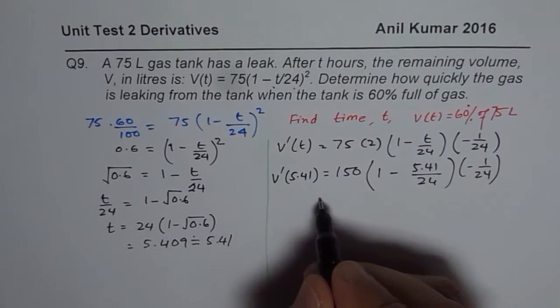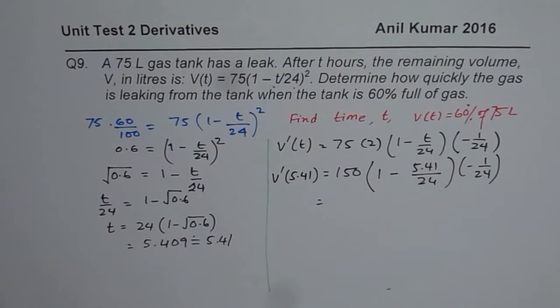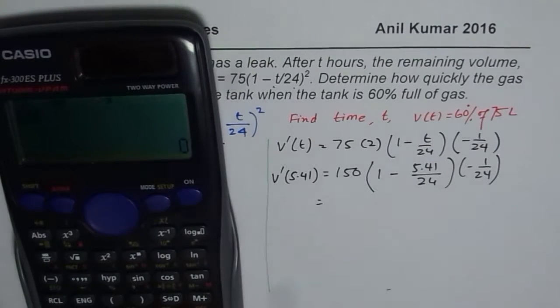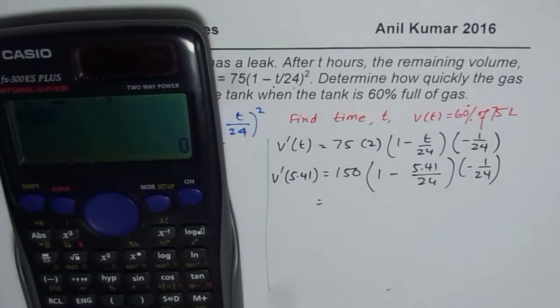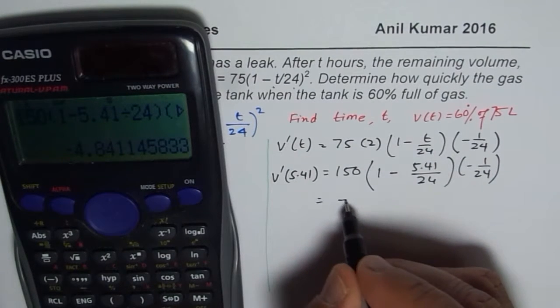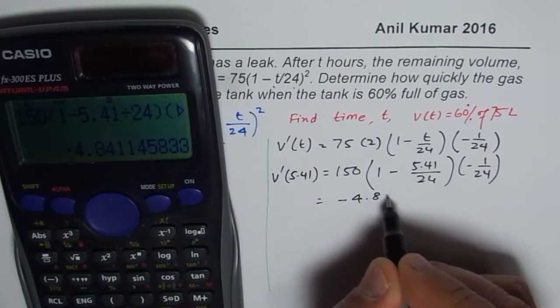So let us calculate this value using the calculator. So we have 150 within brackets 1 minus 5.41 divided by 24, bracket close, then second bracket open, negative 1 divided by 24, bracket close, equals. So we get minus 4.84.